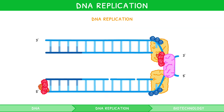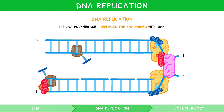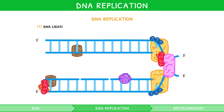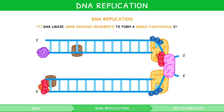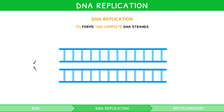In both strands, DNA polymerase 1 then replaces the RNA primer with DNA. On the lagging strand, DNA ligase then joins the Okazaki fragments together to form a single, continuous strand. This results in the formation of two complete DNA strands, each containing one template strand, hence the term semi-conservative. By far the most common 8-marker in the exam is to describe the process of DNA replication.